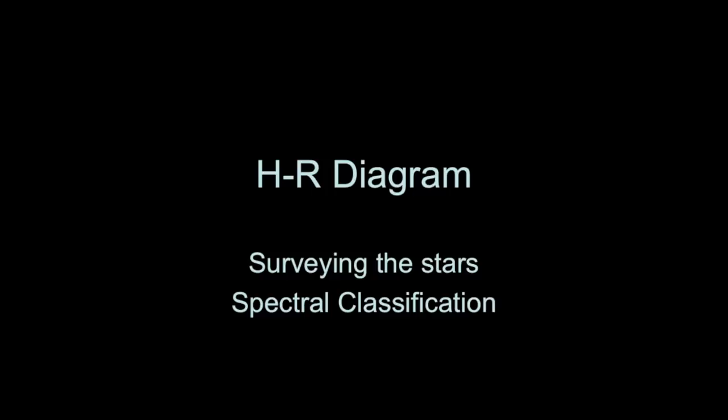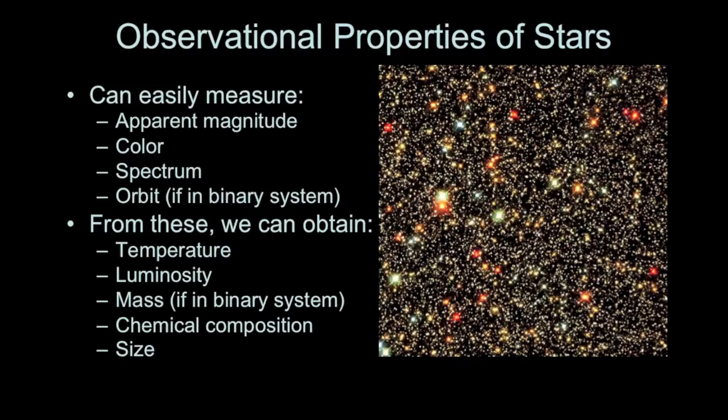Some properties of stars are pretty easy to measure. The apparent magnitude, how bright a star appears to us. The color of a star, whether it's blue or red. We can look at a star's spectrum and if a star is in a visual binary system we can actually observe the star's motion and determine their orbit.